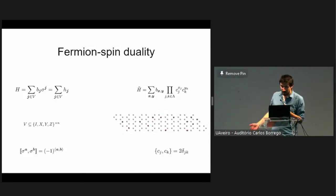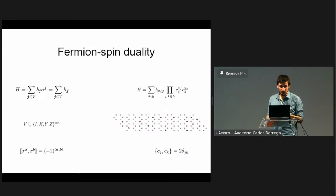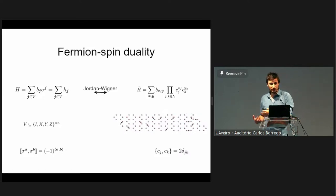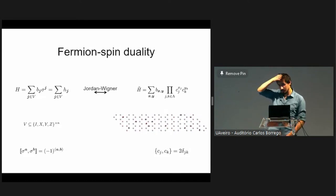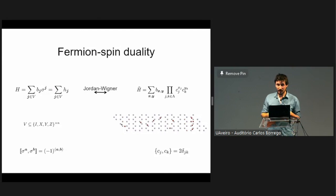That analogous relation is the canonical anti-commutation relations of Majorana fermions. Because you can only ever have one fermion at a site, the Hilbert space dimension of a fermionic model and a spin model is the same. So there's a duality between the two, and we can map between them. The mapping we know and love is the Jordan-Wigner mapping.